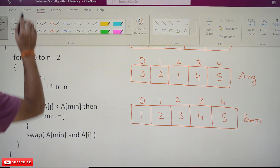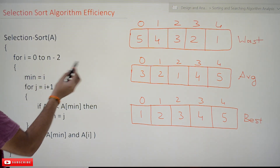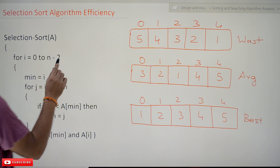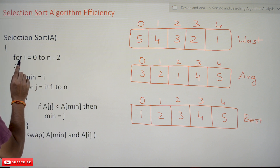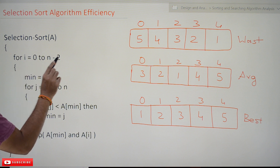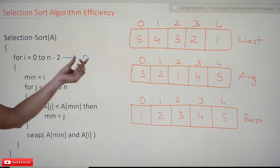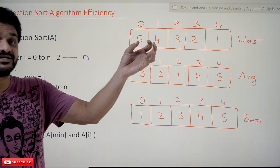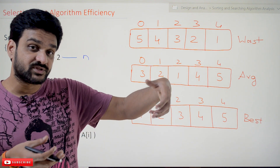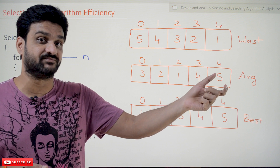We'll analyze each and every step and the step count for each step of the algorithm — that itself gives us the efficiency. For example, take this line of code: it will get executed n number of times. The conditional statement in the loop gets executed n+1 number of times, but here we have 0 to n−2.